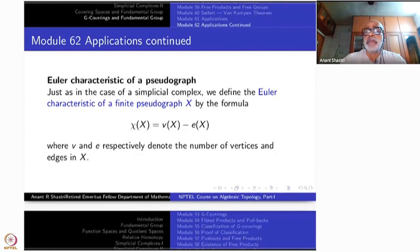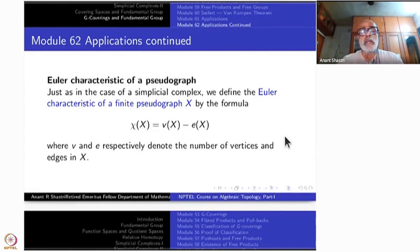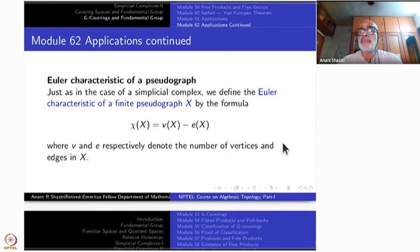Continuing with applications of various theoretical results, let me begin by recalling the definition of Euler characteristic for a simplicial complex. If we denote the number of vertices by V(X), number of edges by A(X), and the number of k-simplexes by F_k, then the alternating sum F_0 minus F_1 plus F_2 minus F_3 and so on is called the Euler characteristic.